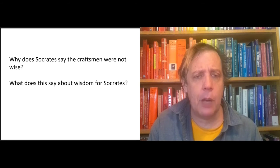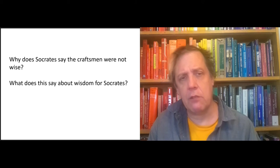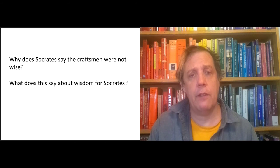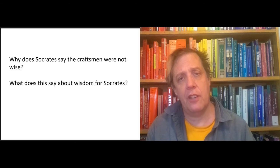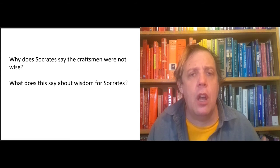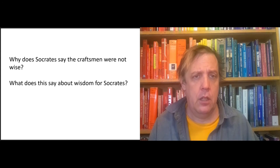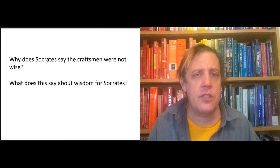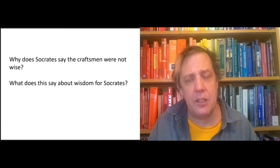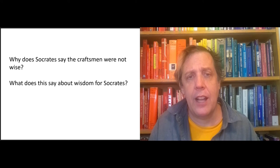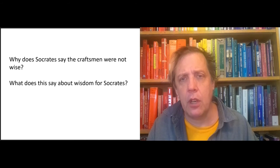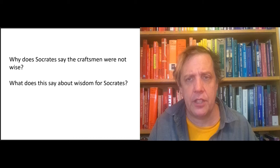So part of this is a couple things about wisdom for Socrates. One is that it has to be general. Socrates is not looking for practical knowledge of particulars. He is looking for something that covers everything. Don't just show me an example of a good pot that you have made. Tell me what it means for a pot to be good. Or tell me what it means for anything to be good. What is goodness? An abstract account of the nature of goodness is crucial for Socrates' mission.